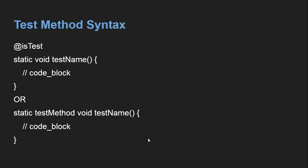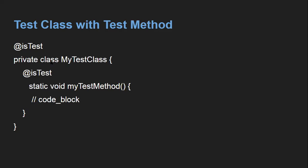Now it's time to understand how we can write test methods. You need to use the @isTest annotation, then write static void, then the test method name and code block. Alternatively, you can use the static keyword followed by the testMethod keyword, then void, then the test name. Generally we prefer the @isTest annotation. For the complete class syntax: write @isTest, then private class MyTestClass, then again @isTest for each test method, which should be static with a return type, the test method name, and the code block. You can implement as many test methods as required to increase the code coverage of your Apex class.